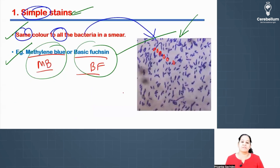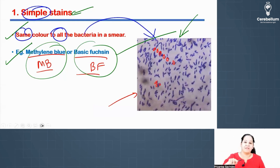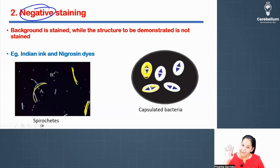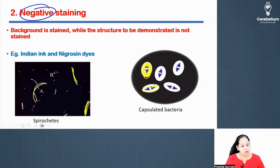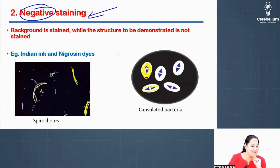See this diagram of simple stain — the bacteria are blue in color but the background is still transparent. In negative stain, we do the reverse: we stain the background and leave the bacteria transparent. That's why it is known as negative stain.